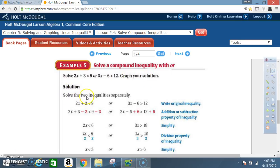Solution. Solve the two inequalities separately. 2x plus 3 is less than 9, or 3x minus 6 is greater than 12.